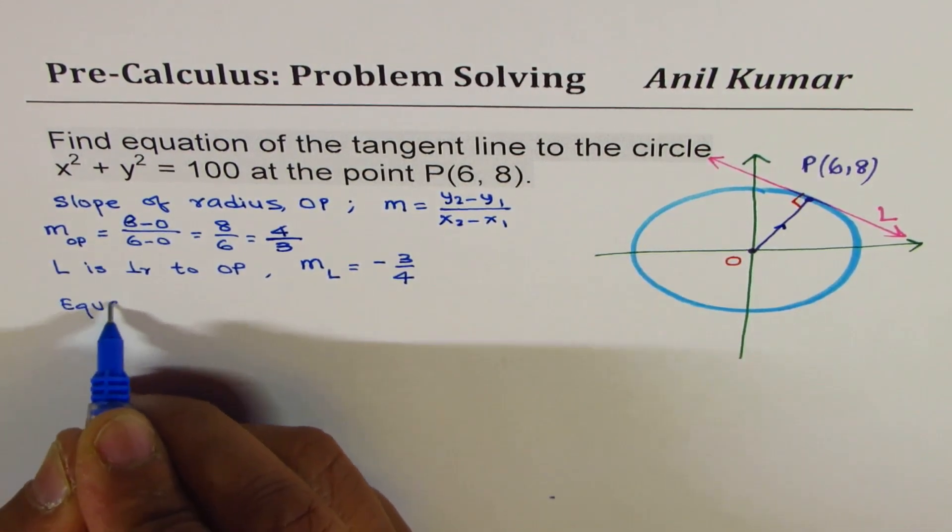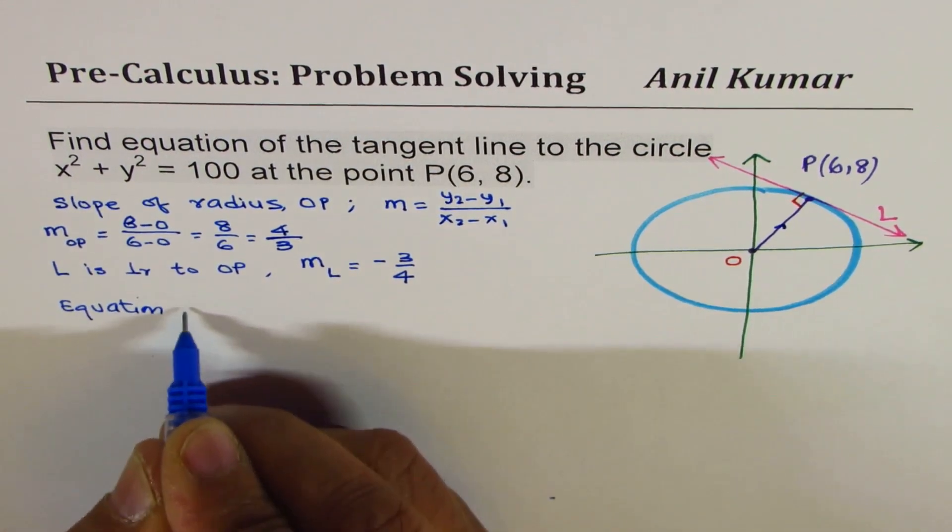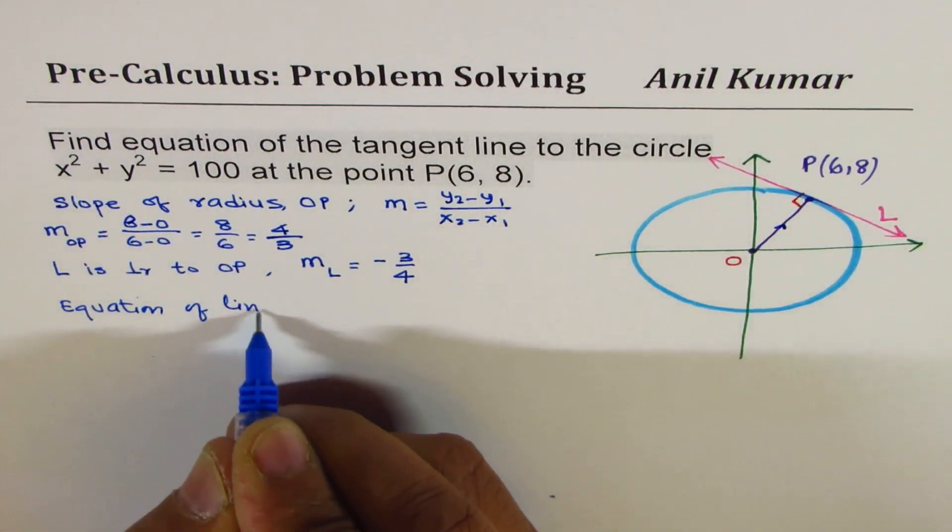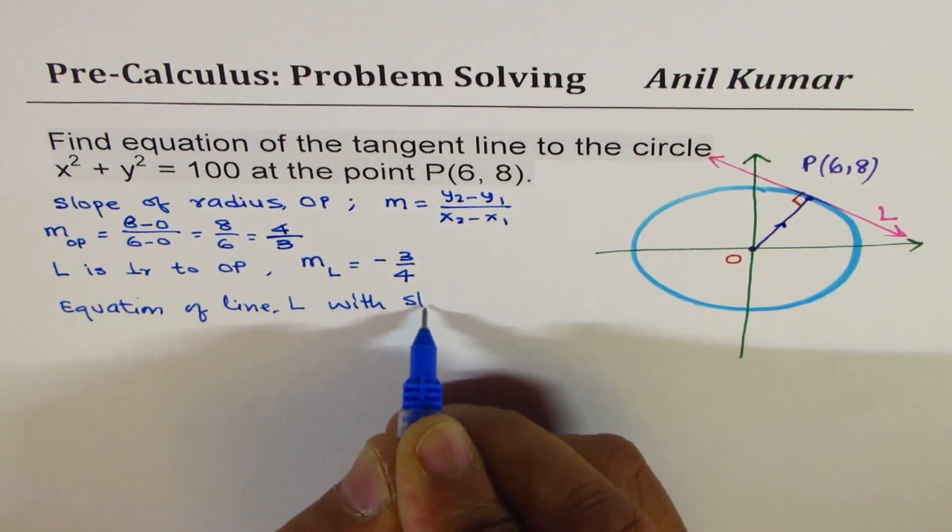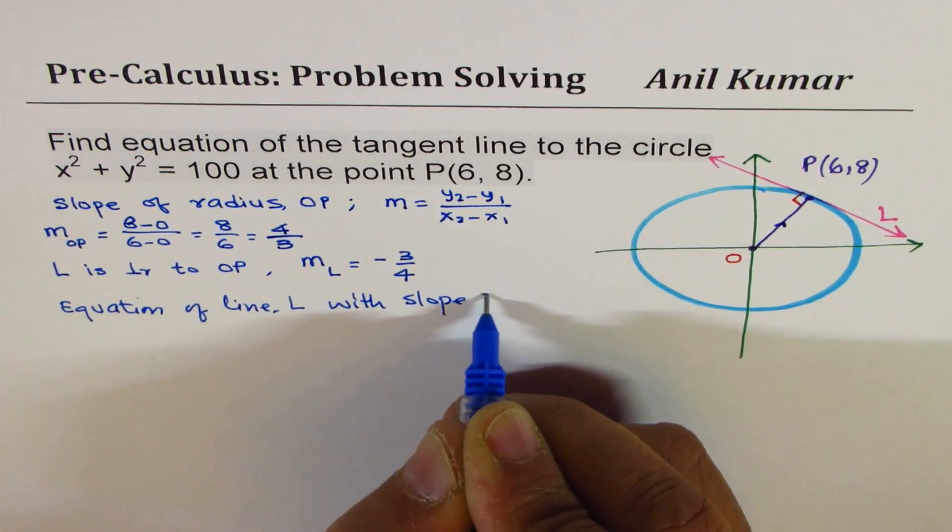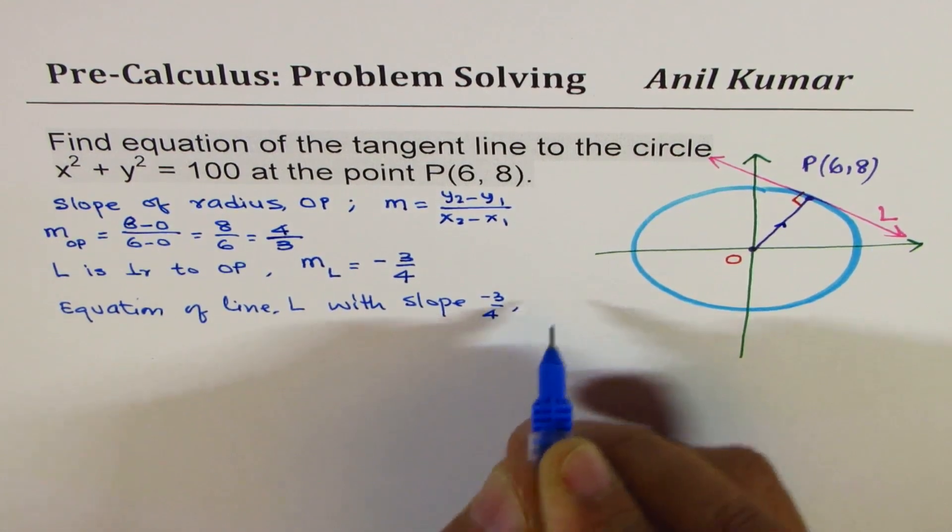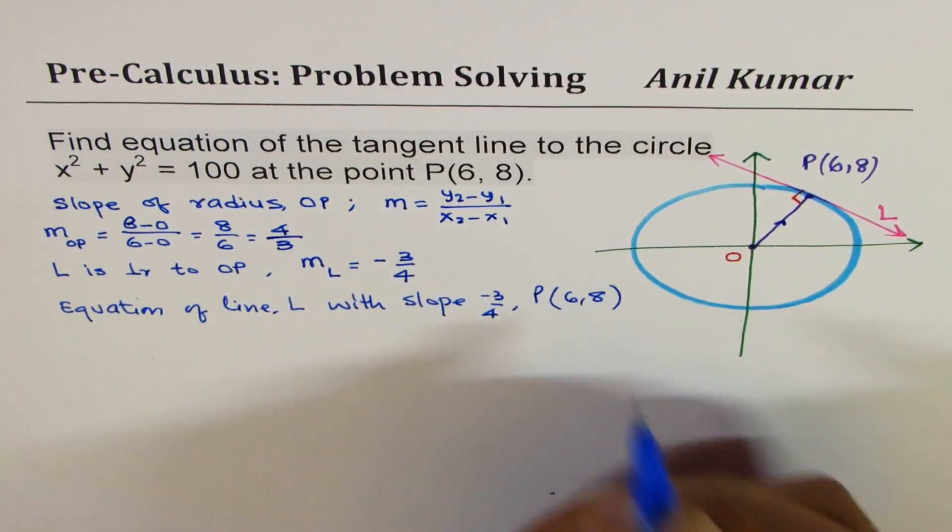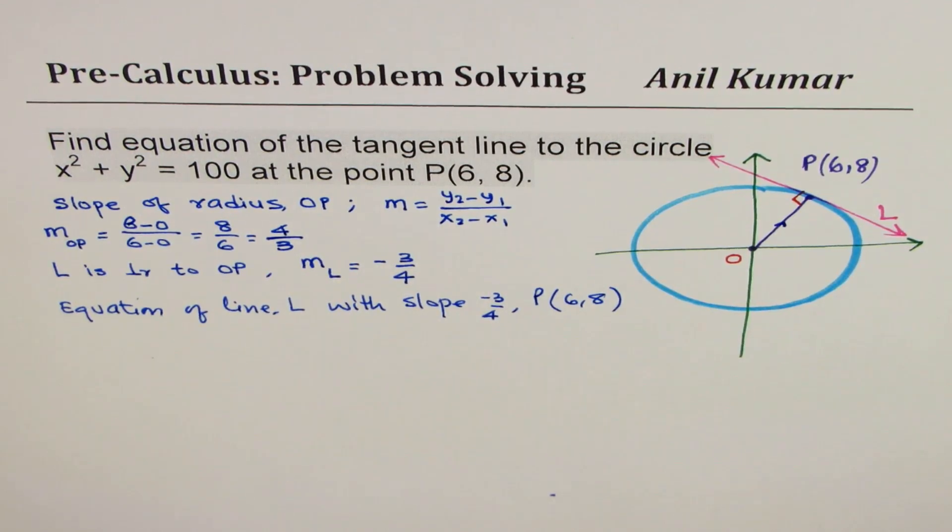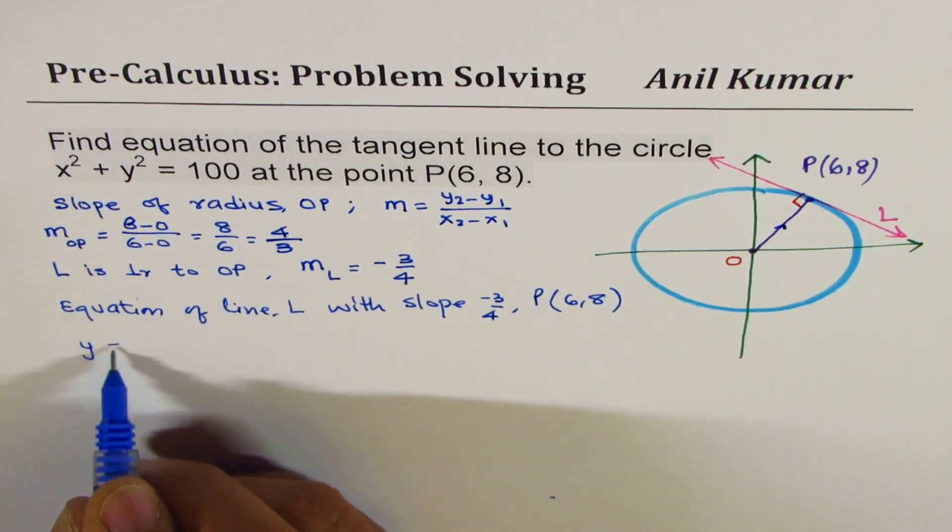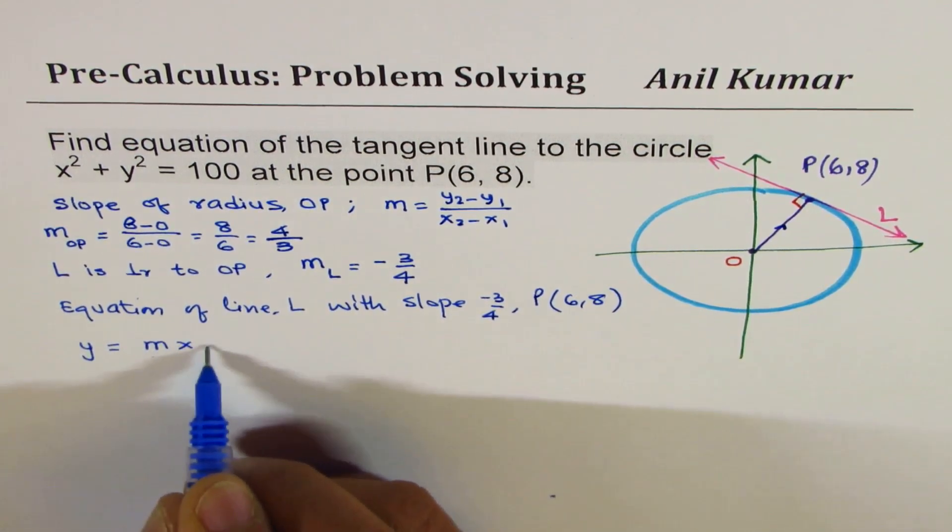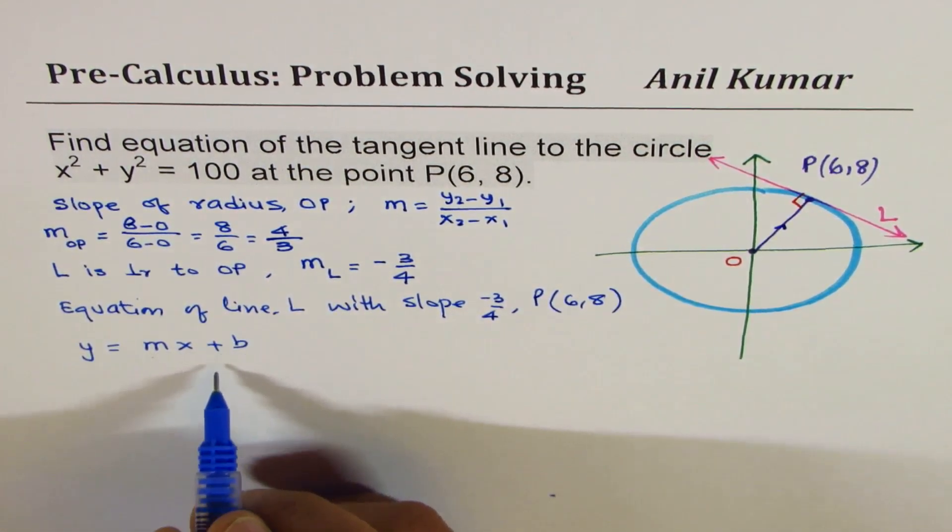Now, once you know the slope and the point, it is very easy to get equation of tangent line. So now the question comes down to writing equation of line L with slope of minus 3 over 4 through a point P, which is (6,8). That is simple.